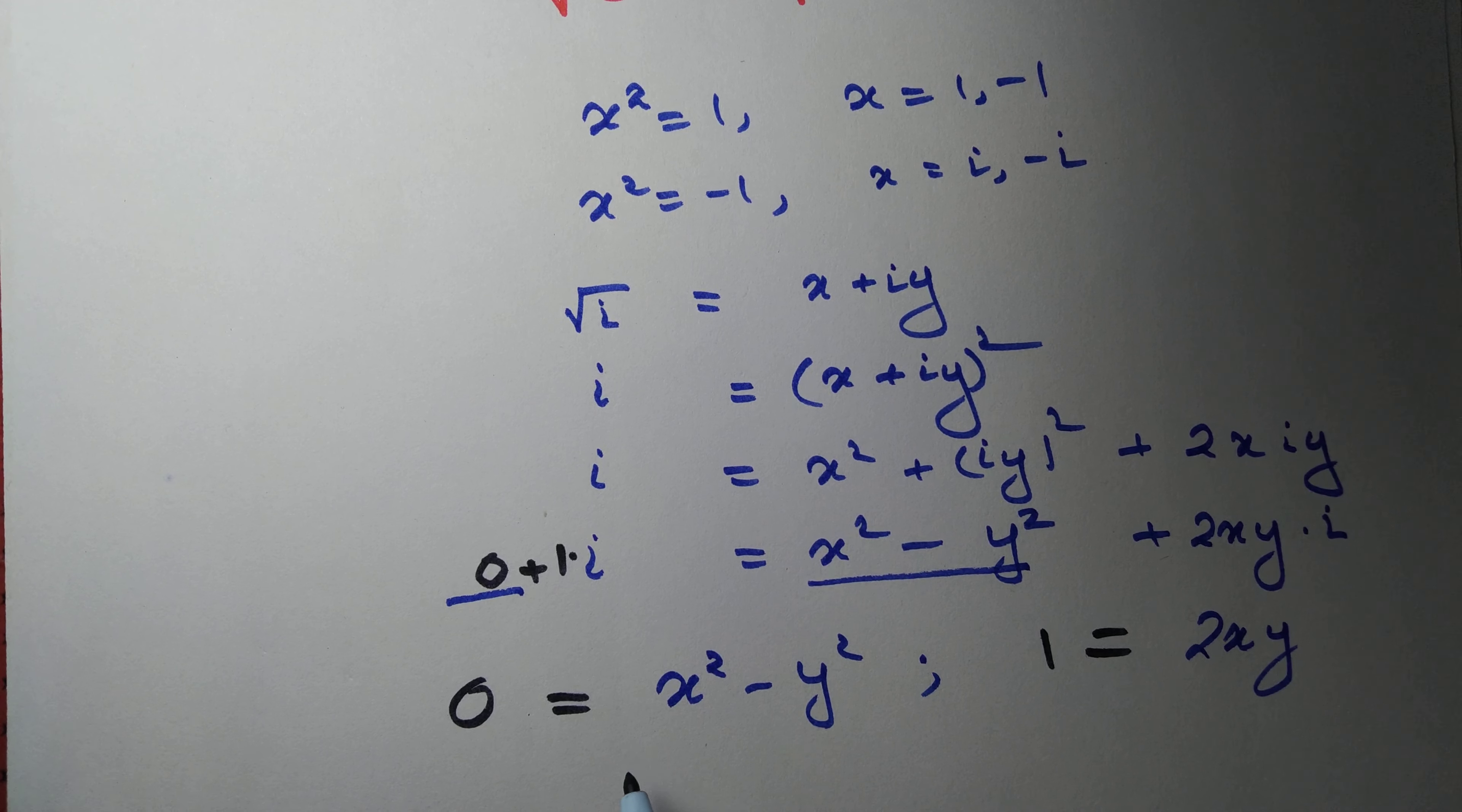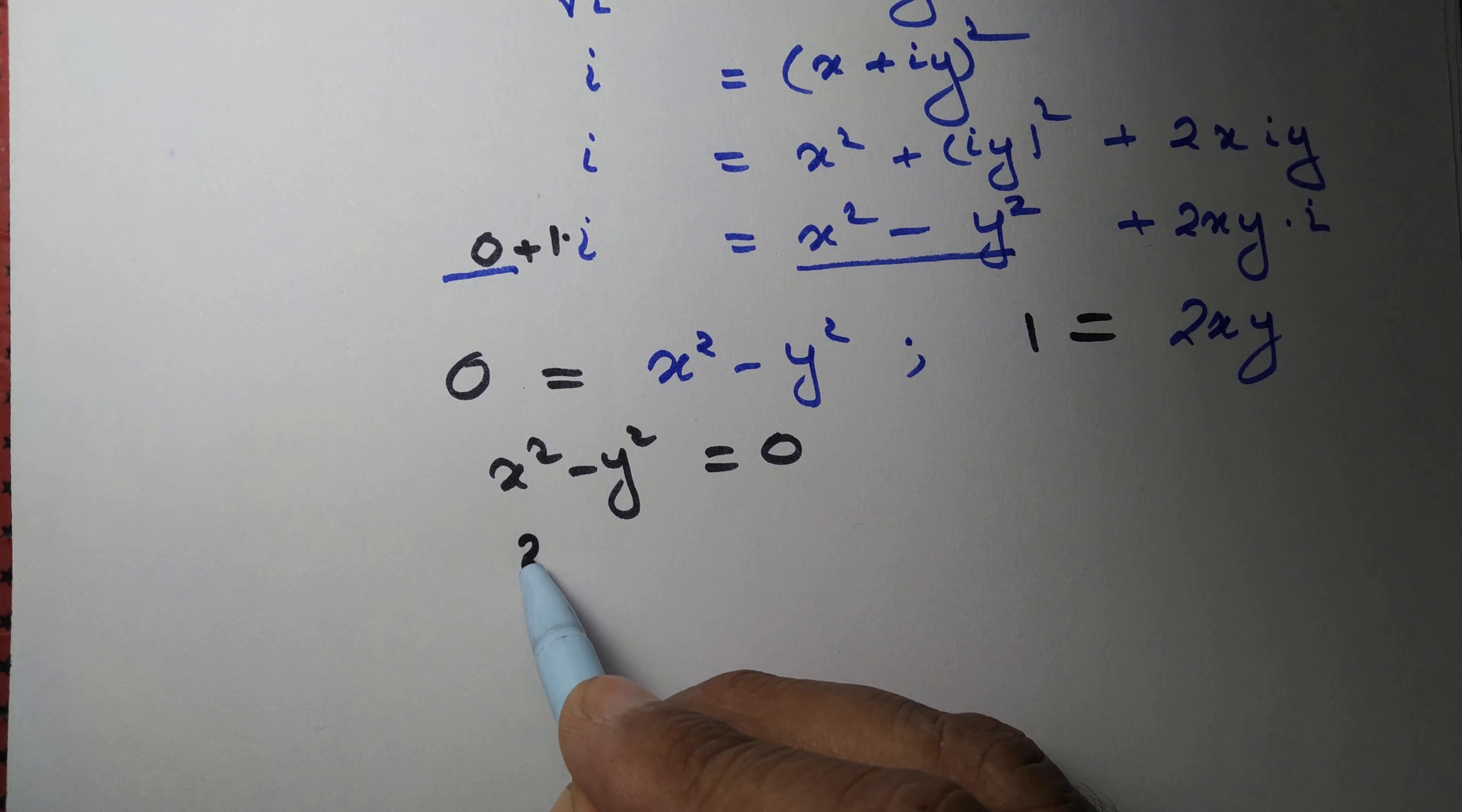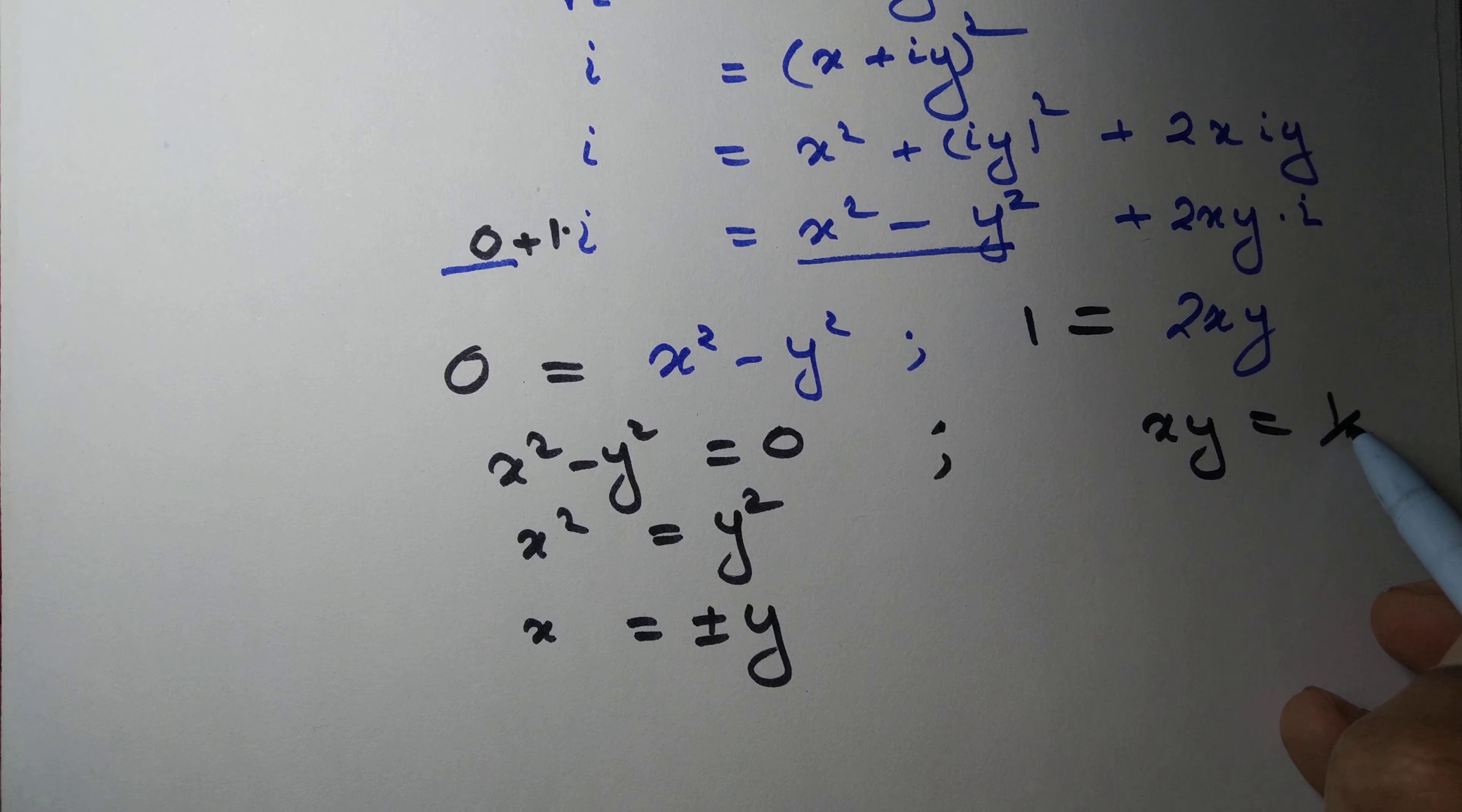From the first equation, we can say x squared minus y squared equals 0. That gives us x squared equals y squared. So if we take the root of both sides, x equals plus or minus y. What about the second one? We have xy equals half.